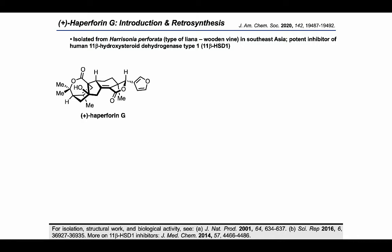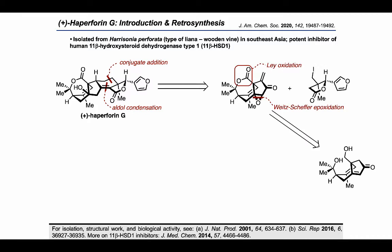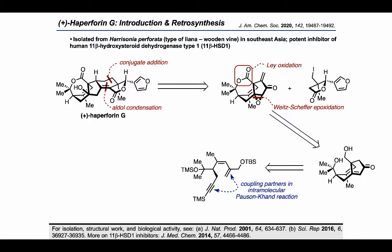In the retrosynthetic analysis of this target, the authors imagined using two initial disconnections — a conjugate addition and an aldol condensation — in order to retrosynthetically cut the final target into two pieces and allow a convergent approach. The intermediate on the left, which we'll look at first, contains an epoxide that the authors imagined accessing through a Weitz-Schaefer epoxidation, as well as a lactone, which the authors thought might arise from a diol using the Ley oxidation. Going back further, the authors proposed that the cyclopentenone present in this intermediate might be accessible using an intramolecular Pauson-Kahn reaction on an acyclic enyne starting material, where these are the fragments that would need to be connected in the forward direction to form the cyclopentenone moiety.